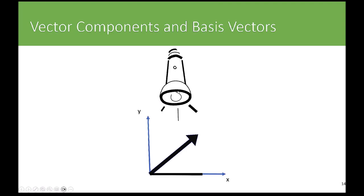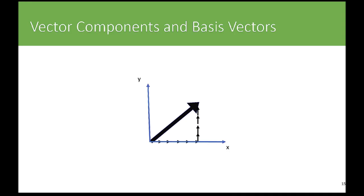Similarly, shining the light perpendicular to the x-axis gives the shadow on the x-axis as the x component. As you increase the angle to the x-axis, the x component gets smaller. Another way of visualizing vector components is to ask: to get from the base to the tip of the vector, how far do you travel in the x direction and how far in the y direction?